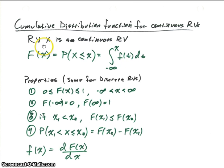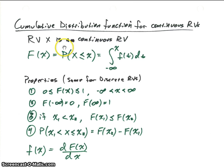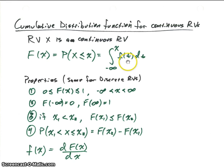Suppose we have a random variable x and it's a continuous random variable. We define a function capital F of x, which is the probability that our random variable will be less than or equal to that lowercase x. This part is the same for any random variable and doesn't change at all. How we calculate it for a continuous random variable is slightly different — in this case we've got a continuous density function f of x, and we need to integrate it from minus infinity to x.